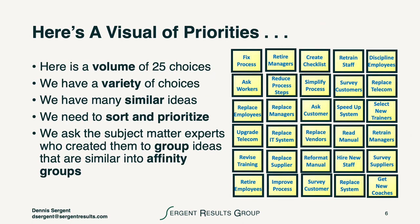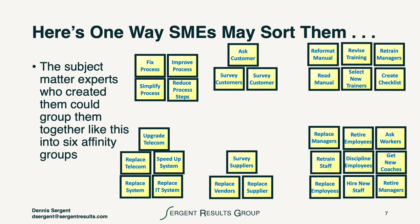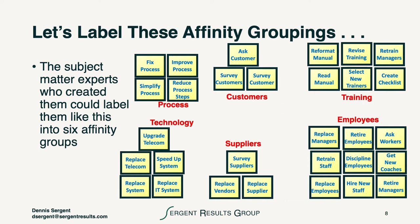Then we take a visual of all the priorities. In this example, we've got 25 choices — a wide variety — and we need to sort and prioritize them further. We ask the subject matter experts who created them to begin grouping similar ideas together into affinity groups. These similarities may be sorted as you see here: the exact same 25 sorted into six different categories — process, technology, customers, suppliers, training, and employees.